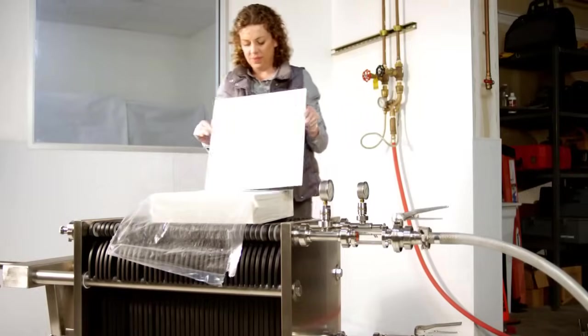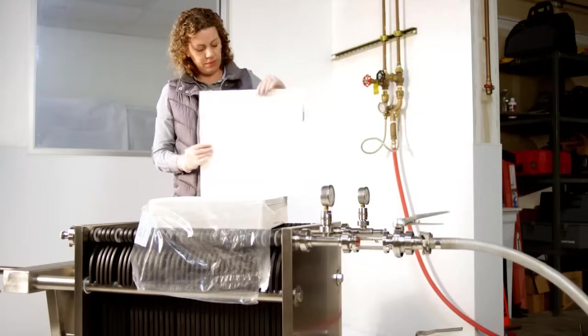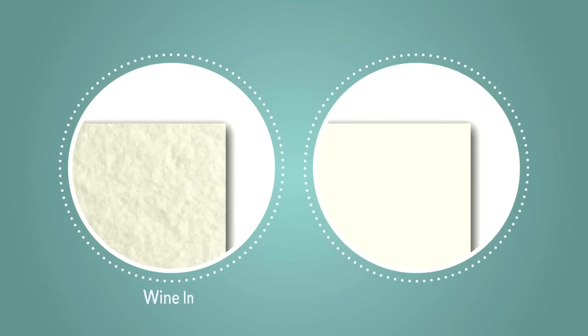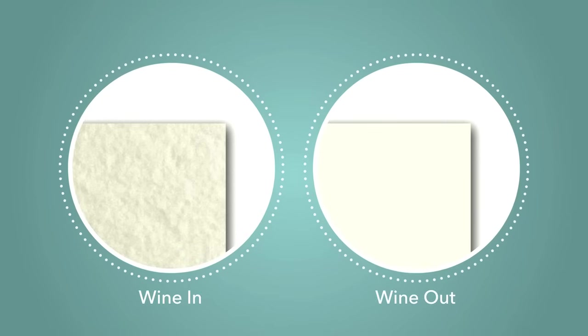Be careful not to damage corners of edges or pads as you remove them. Damage may increase dripping during filtration. You will notice that each pad has both a rough side and a smooth side. Wine should always flow into the rough side of the pad and out of the smooth side.